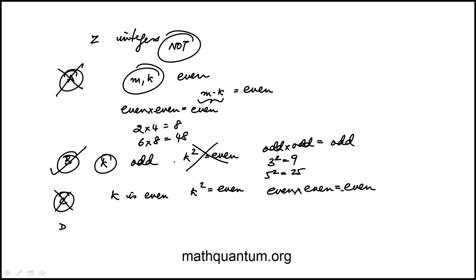So C is correct and then finally D is m is even and k is odd. Then we know that the product of m times k would be even because in a product if you have an even integer then the entire product becomes even. So D is also true which means that is not the answer. The answer is B.